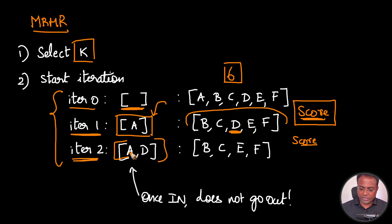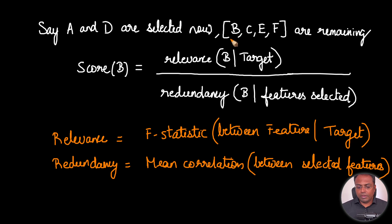Now let's try to understand how this score is computed. In this iteration, we have two variables selected and four more variables are remaining. We compute a score, which we can call as the MRMR score, which is nothing but, in the numerator, you have the relevance of B on the target. This relevance is the F statistic between the feature and the target. We want this number to be as high as possible.